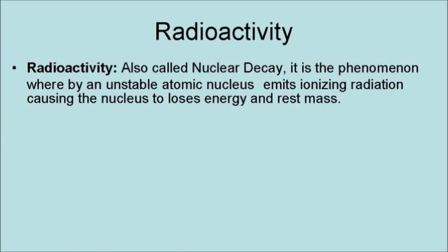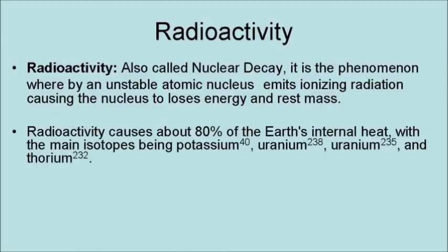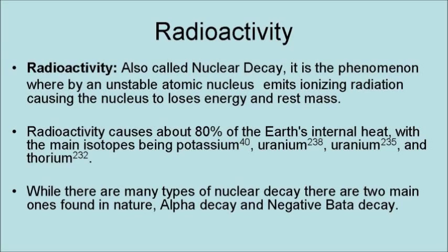Radioactivity, also called nuclear decay, is a phenomenon whereby an unstable atomic nucleus emits ionizing radiation, causing the nucleus to lose energy and mass. Radioactivity causes about 80% of the Earth's internal heat, with the main isotopes being potassium-40, uranium-238, uranium-235, and thorium-232. While there are many types of nuclear decay, there are two main ones found in nature: alpha decay and negative beta decay.